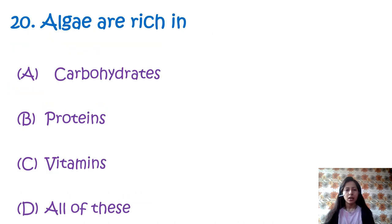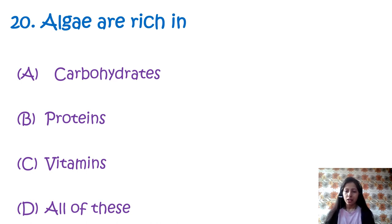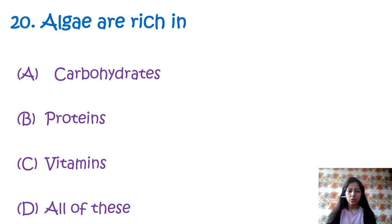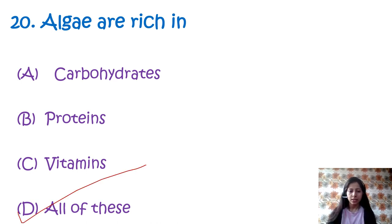Question 20: Algae are rich in — option A: carbohydrates, option B: proteins, option C: vitamins, option D: all of these. Algae are rich in several nutrients including omega 3, omega 6, omega 7 fatty acids, vitamin B12, C, E, minerals like calcium and potassium, and a wide range of carotenoids. So the answer is option D, all of these.